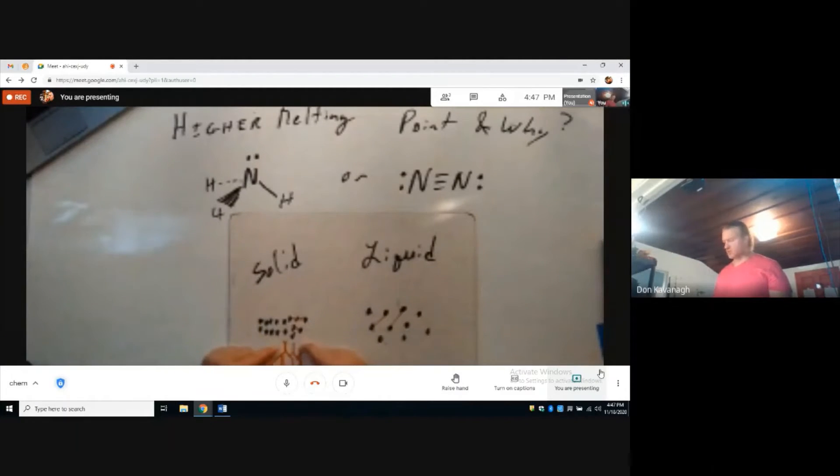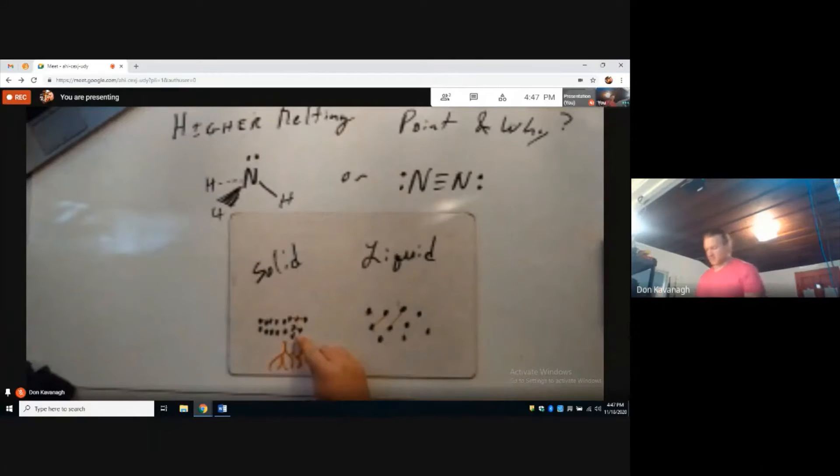The heat added is used to break the interactions between the molecules. In the liquid phase post-melt, these lengths are longer.